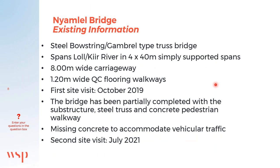The existing bridge is a steel ball-string gambrel-type truss bridge. It spans the Lowell River in four spans of 14-metre simply supported spans. The allowed carriageway width is eight metres, with 1.2-metre sidewalks on either side. The first site visit in October 2019 noted that the bridge was partially completed, with only the substructure, steel truss, and concrete pedestrian walkways in place. There was a missing concrete deck, meaning the bridge cannot accommodate vehicular traffic.